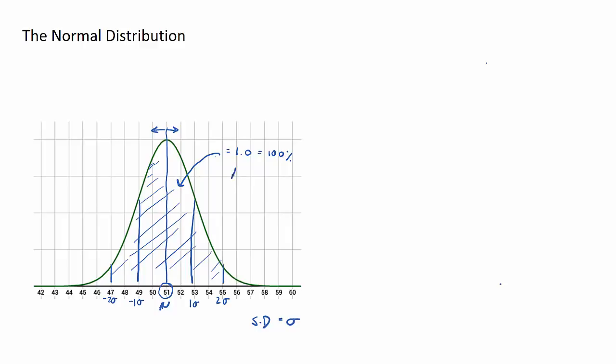Now the area when we talk about normal distribution curves is the same as what we call the probability.